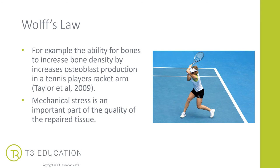An example of Wolff's law is a study by Taylor that found there was an increased amount of osteoblast production in a tennis player's racket arm as opposed to their non-racket arm. The more they were creating mechanical stress on that arm increased cellular production, creating stronger bones. Therefore, it's really important that we create enough mechanical stress to help improve the quality of the repaired tissue when thinking about how Wolff's law relates to collagen.